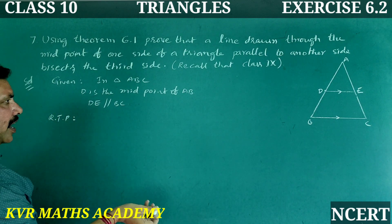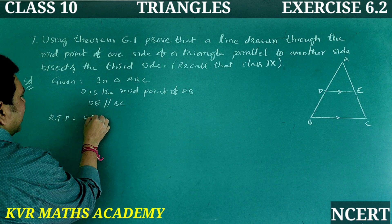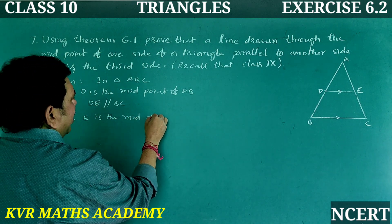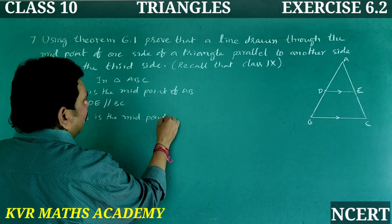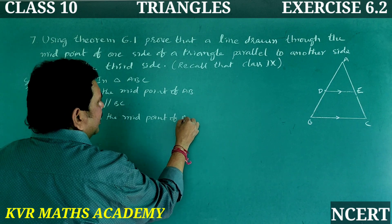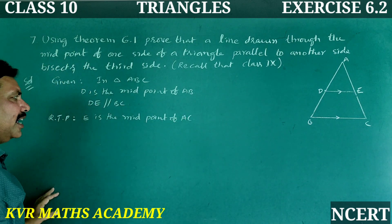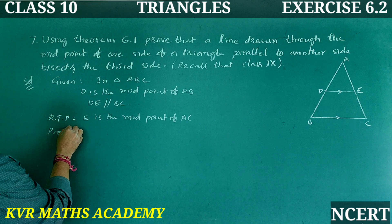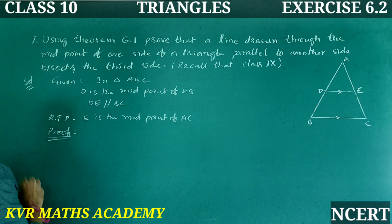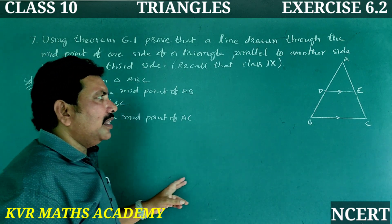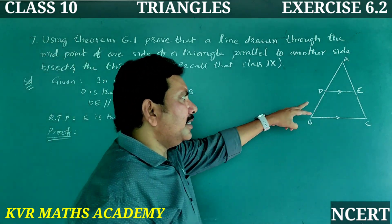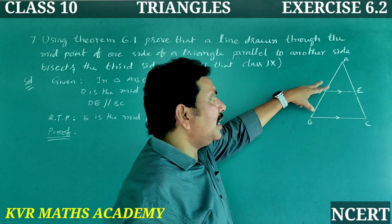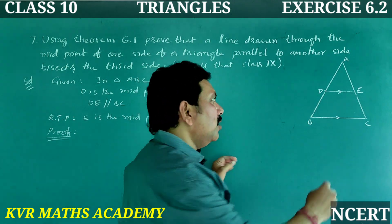Required to prove: E is the midpoint of AC. Proof: Since D is the midpoint of AB, we have AD is equal to DB.